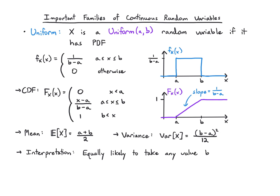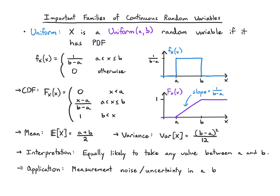Since it's continuous, the interpretation is really simple: it's just equally likely to be any value between a and b. Why would we need this? Well, let's say you have some measurement device and it has some noise or uncertainty, and you know the range of that uncertainty but you don't know anything else. It's reasonable to just model that noise as uniform in that range.